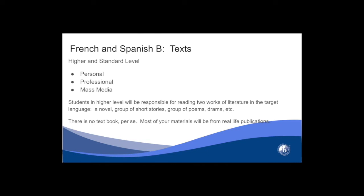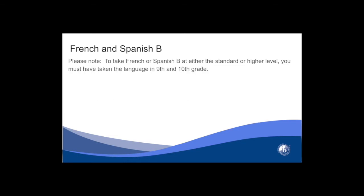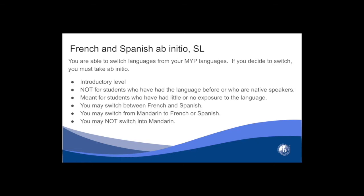For the grammar and vocabulary section, there is a textbook, but most of your materials actually come from real-life publications. In order to take French or Spanish B at either the standard or higher level, you must have taken the language in both 9th and 10th grade. We also offer French and Spanish Ab Initio standard level. You are able to switch languages from your MYP language. If you decide to switch, you must take Ab Initio. This is an introductory level course — it is not for students who have had the language before or who are native speakers. In order to take this course, it's assumed that you have had little or no exposure to the language.